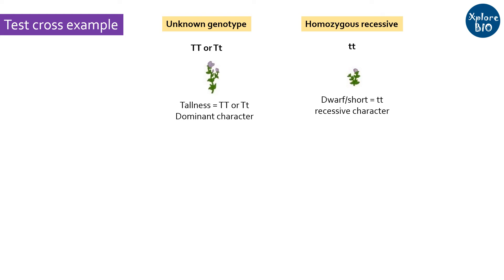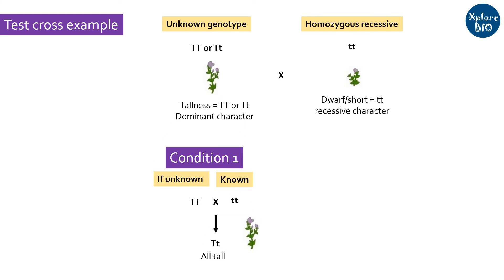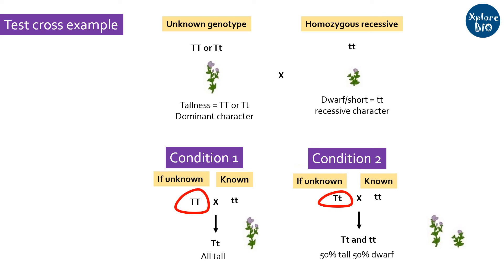On the other hand, if the unknown individual is showing tall phenotype, we cannot simply predict its genotype. To confirm if it is in homozygous or heterozygous state, we cross it with a homozygous recessive genotype (tt). After crossing, if you get all individuals showing the tall character, it means the unknown individual was homozygous dominant (TT). But if you get some dwarf individuals along with the tall ones, it means the unknown individual was in heterozygous state (Tt). This way, using test cross, you are able to determine if the unknown individual is in homozygous or heterozygous state for a particular dominant trait or character.